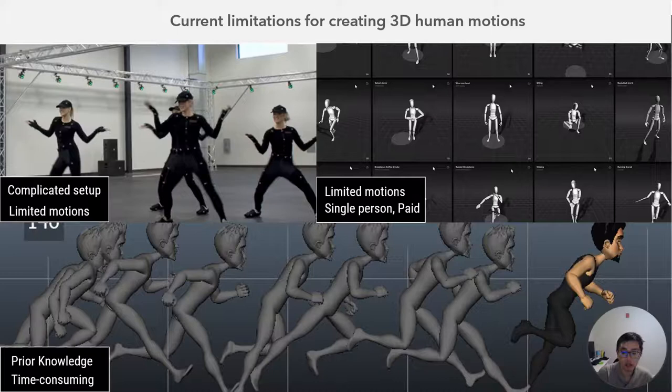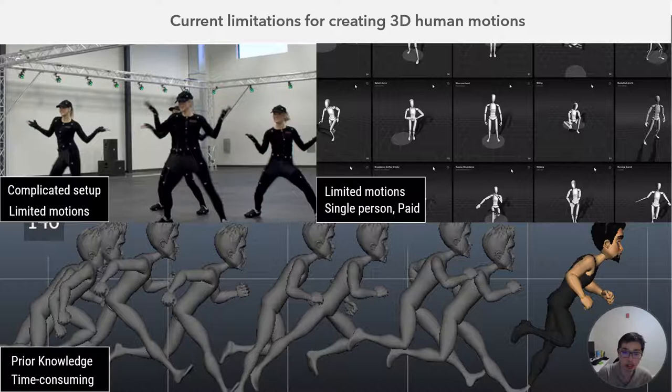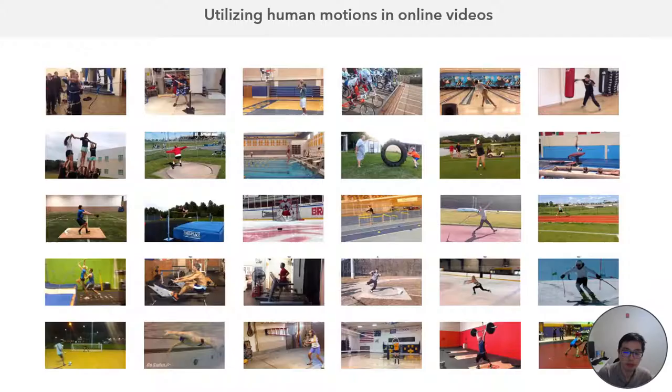These immersive authoring tools are great, but creating different kinds of 3D human motion is still pretty challenging. If we can record our motion in the VR, that's great, but it only limits us to generate motion that can be performed by the users. We know there are different kinds of 3D human motion datasets online, but unfortunately they only offer limited motion and usually for a single person. And if we're using 3D animation tools to generate the motions, it requires prior knowledge and is also time-consuming.